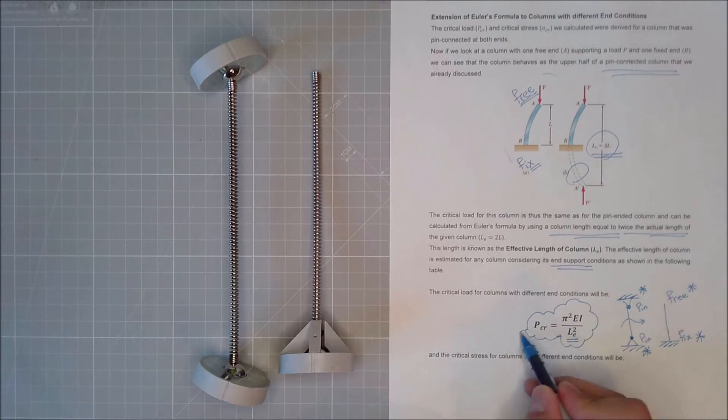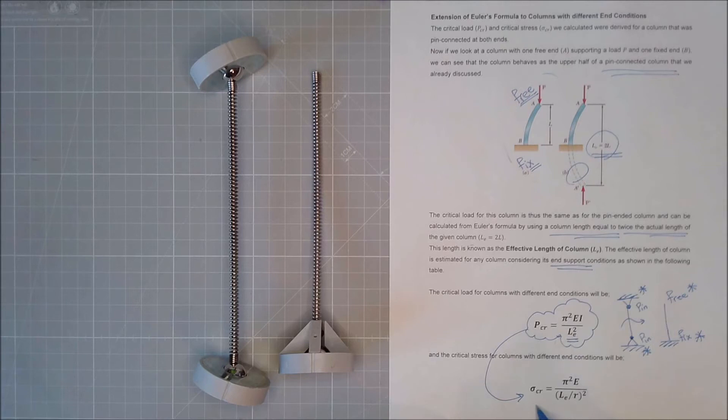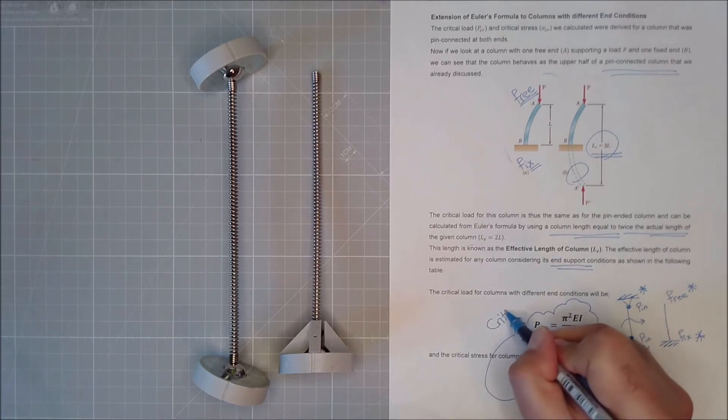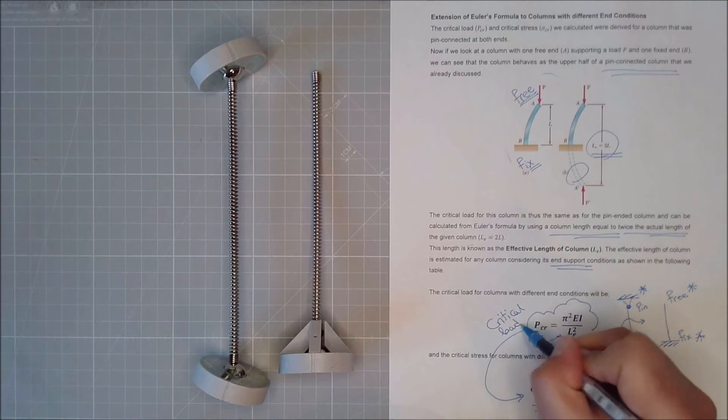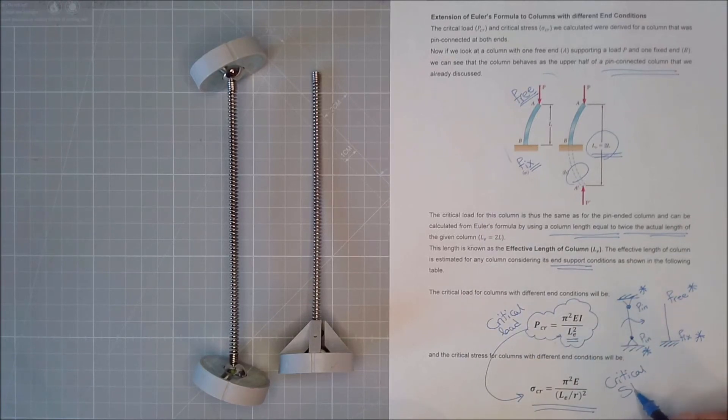Similar to that, because LE changes, then my critical stress changes as well. So my critical load and my critical stress. Nothing else changes, only LE changes. Why? Because the buckling shape of my columns are changing.